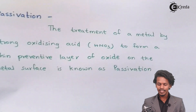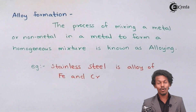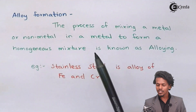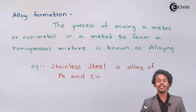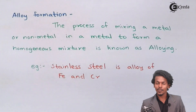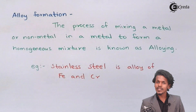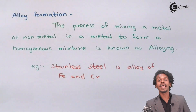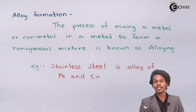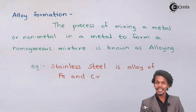The next method is alloy formation. An alloy is the mixture of a metal with another metal or a non-metal — a homogeneous mixture. Iron is a pure element in which rusting takes place, as we studied in the mechanism. When we talk about steel or stainless steel, the iron is being changed into a different kind of compound by mixing it with other elements.